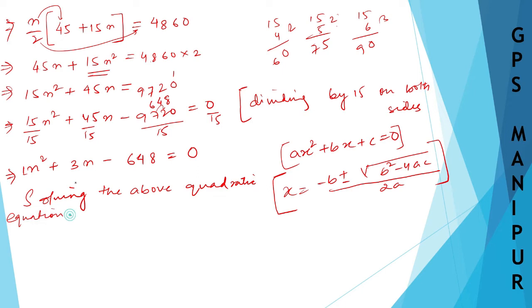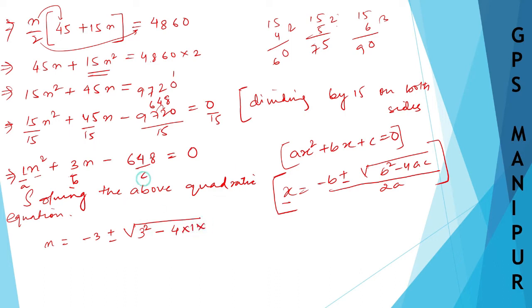Now solving the above quadratic equation. Instead of X, there is N. So N is equal to minus B — here A is 1, B is 3, and C is 648. So minus B will be minus 3, plus or minus root over B squared, that is 3 squared, minus 4 into A into C, that is 4 into 1 into 648. Divided by 2A, so 2 into 1 equals 2.